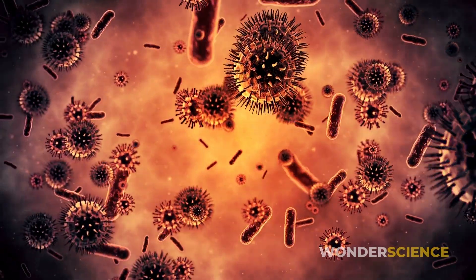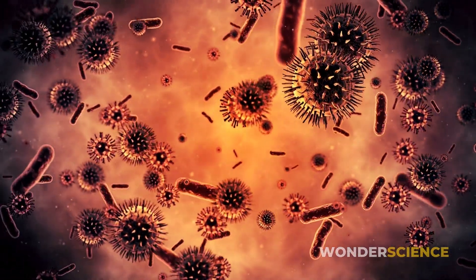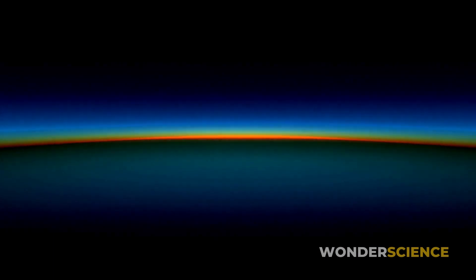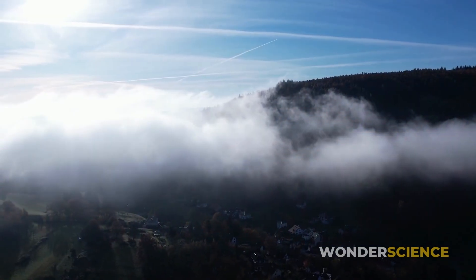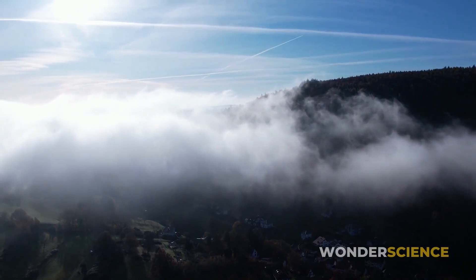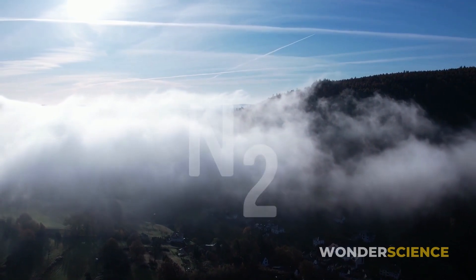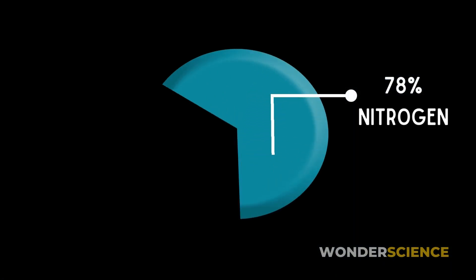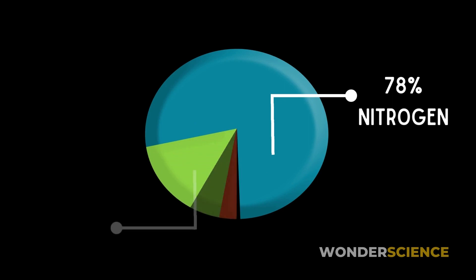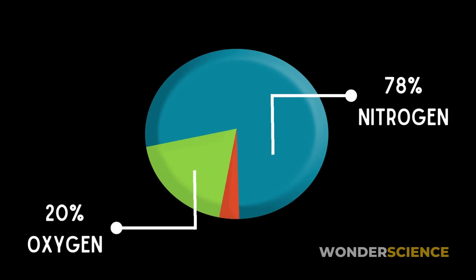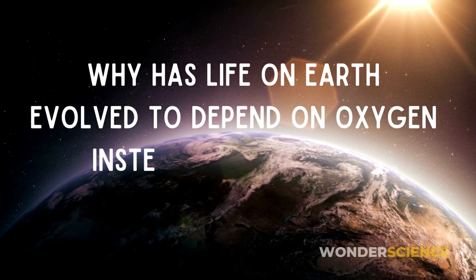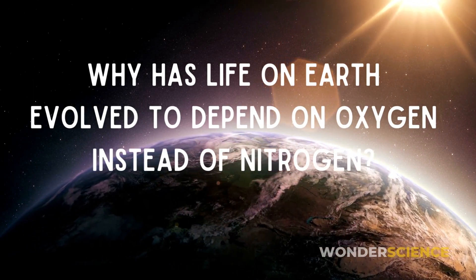If you think about it, life has evolved to adapt to the second most abundant gas in the environment, that is oxygen, but not the gas that is the most abundant in the atmosphere, which is nitrogen. That's a little odd. 78% of the atmosphere is made of nitrogen, while only 20% of the atmosphere is oxygen. So why has life on earth evolved to depend on oxygen instead of nitrogen?